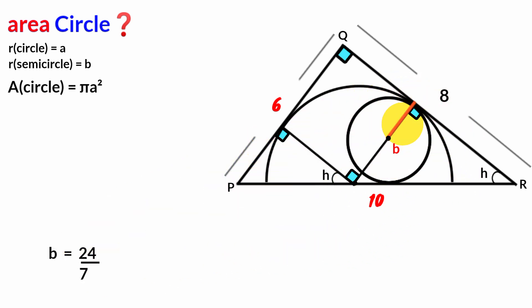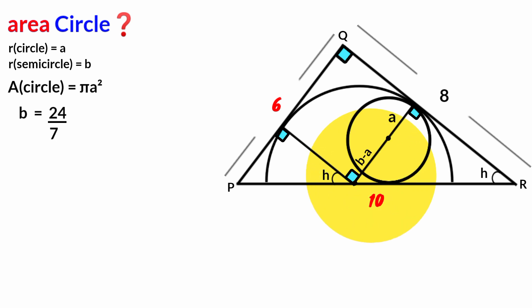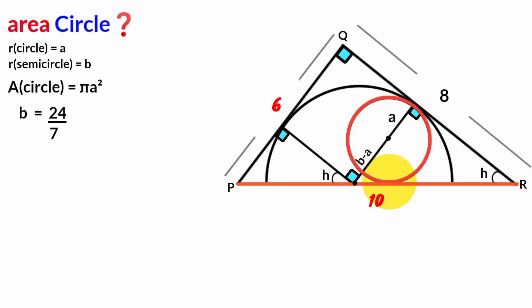Coming back, A is the radius of the small circle, and this line has length B. Therefore this part must be B − A. We see that line PR is a tangent to the small circle at this point, so drawing the radius gives a right angle with the tangent.